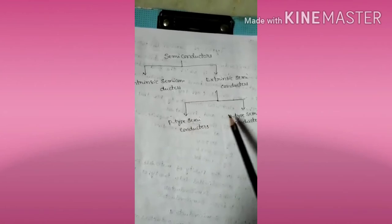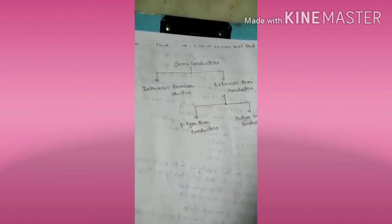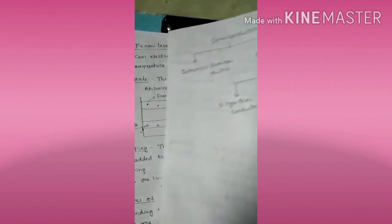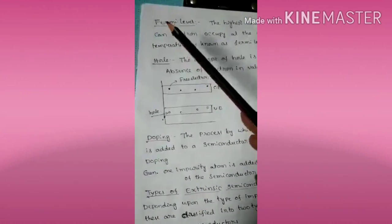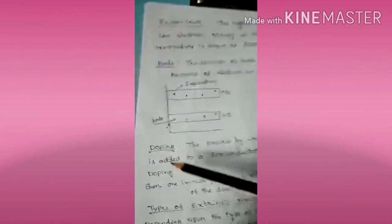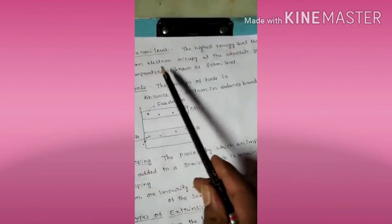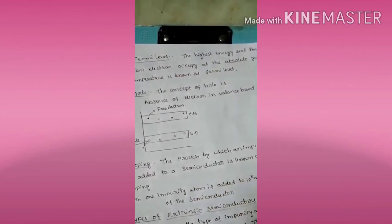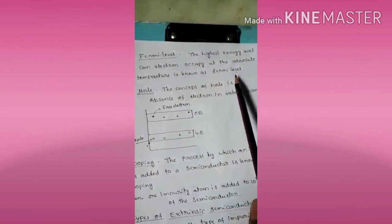The two types of extrinsic semiconductors are P-type semiconductors and N-type semiconductors. Before discussing extrinsic semiconductors further, we need to understand three key terms: Fermi level, hole, and doping. The Fermi level is the highest energy level that an electron can occupy at absolute zero temperature.